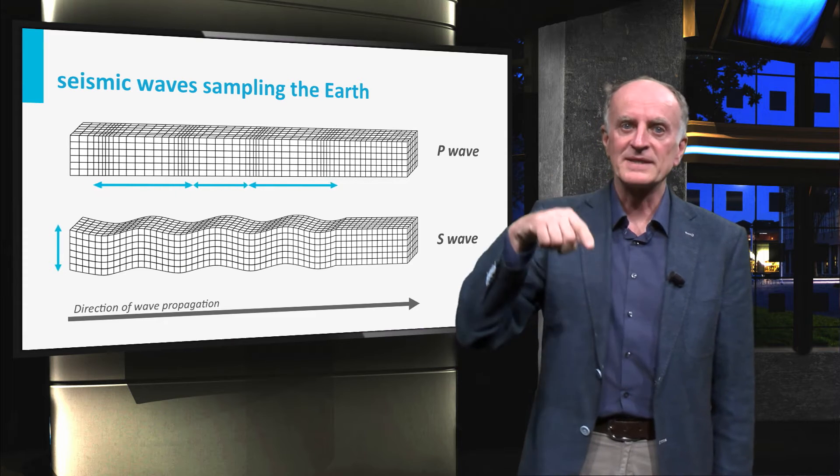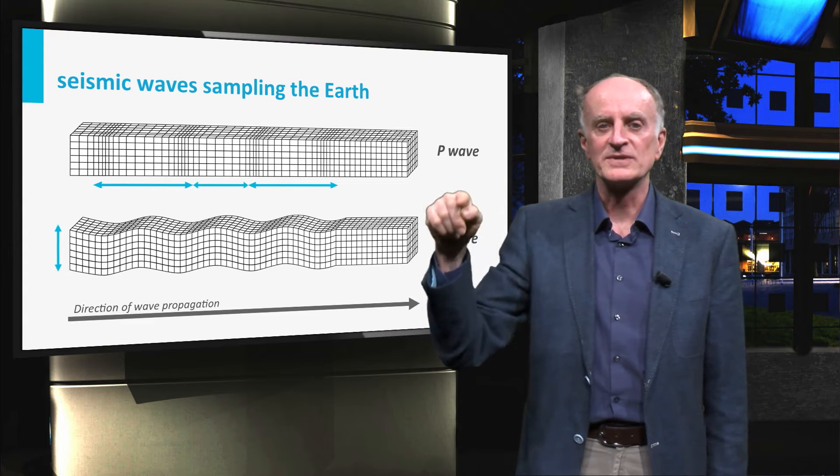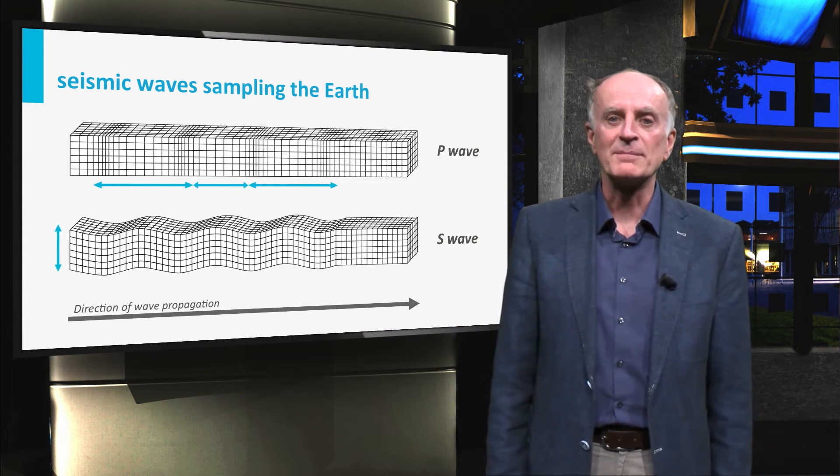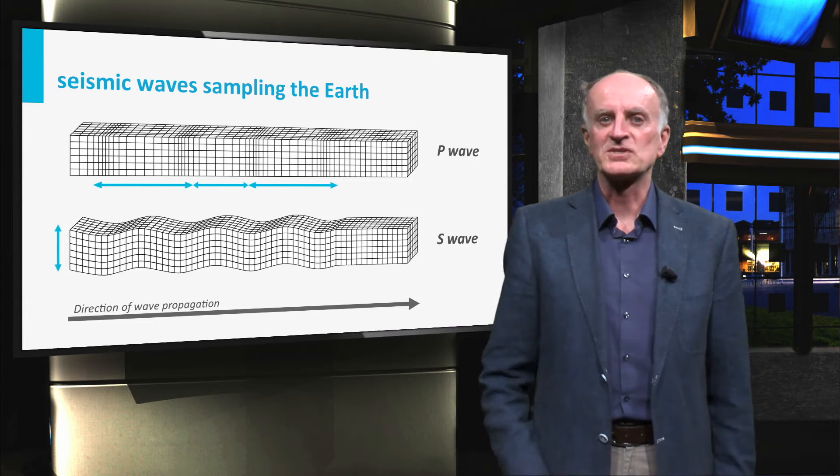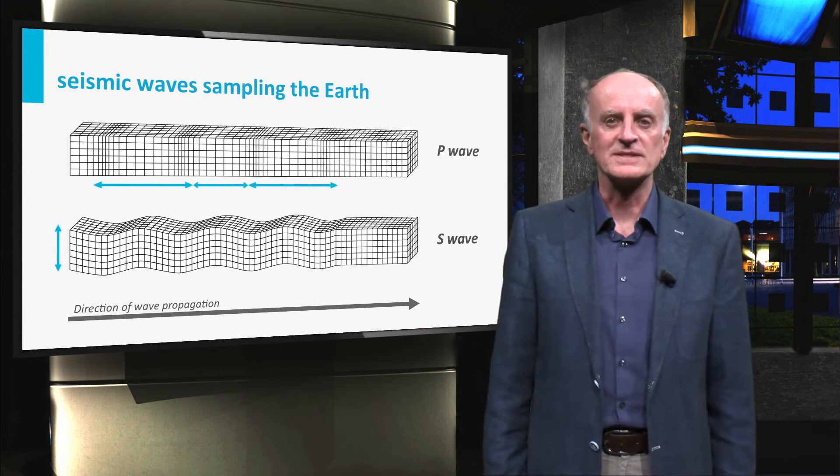In S waves, particles oscillate perpendicular to the direction of wave transmission and are therefore slower and very sensitive to the degree of coupling between adjacent crystals. Rocks which are partly molten will have very low S wave velocities.